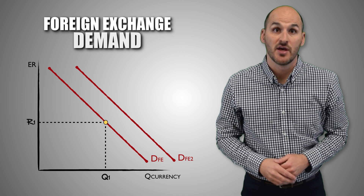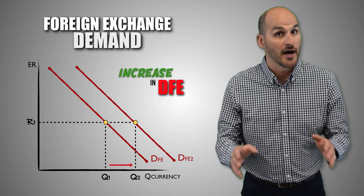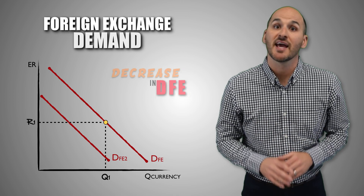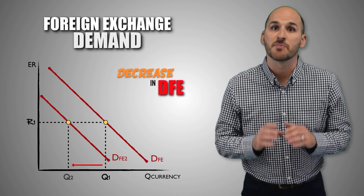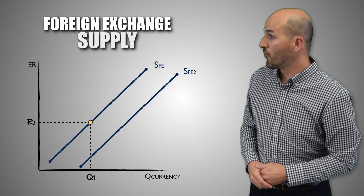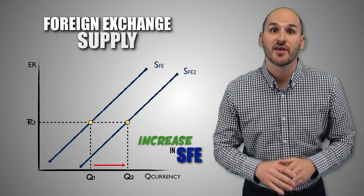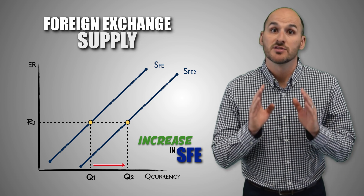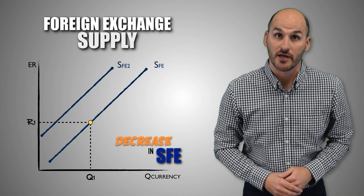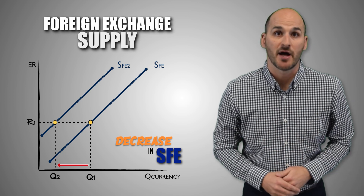A rightward shift of the foreign exchange demand curve indicates that the demand for a currency has increased in the foreign exchange market, and a greater quantity of that currency is being purchased no matter the exchange rate — foreign consumers are buying more currency. A leftward shift of the foreign exchange demand curve indicates that the demand has decreased, and a lesser quantity is being purchased no matter the exchange rate — foreign consumers are buying less currency. A rightward shift of the foreign exchange supply curve indicates that the supply has increased, and a greater quantity is being supplied no matter the exchange rate — domestic currency suppliers are selling more currency. A leftward shift of the foreign exchange supply curve indicates that the supply has decreased, and a lesser quantity is being supplied — domestic currency suppliers are selling less currency.